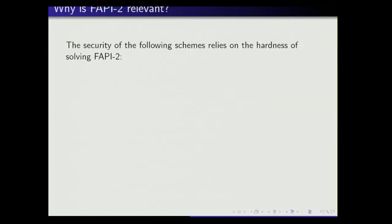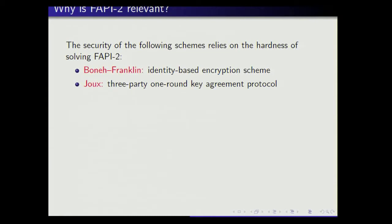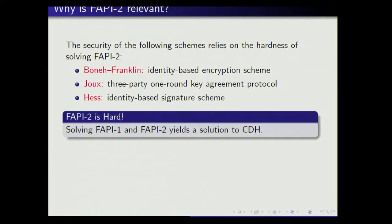Why is this problem relevant and interesting? We can mention a few schemes whose security is based on this assumption: the celebrated identity-based encryption scheme of Boneh and Franklin, the three-party one-round key agreement protocol by Joux, which is based on this assumption, and identity-based signature schemes due to Hess. Basically, the assumption we want to make is that FAPI2 is hard. If you can solve both FAPI1 and FAPI2 simultaneously, this yields a solution to the computational Diffie-Hellman assumption, so it is reasonable to believe that FAPI2, at least for the moment, is hard.